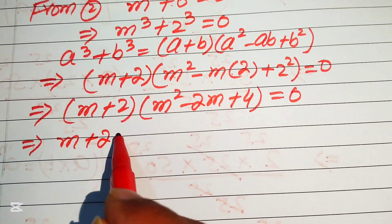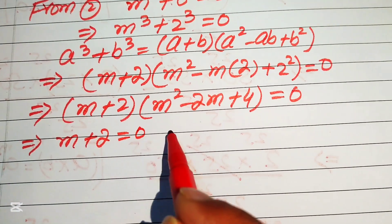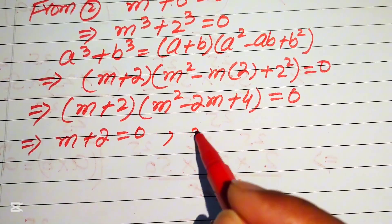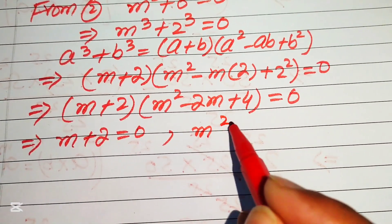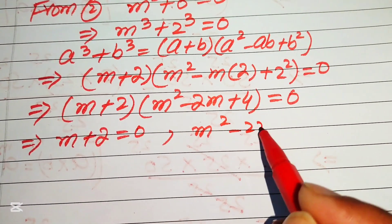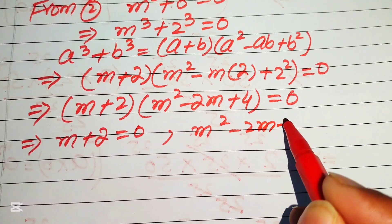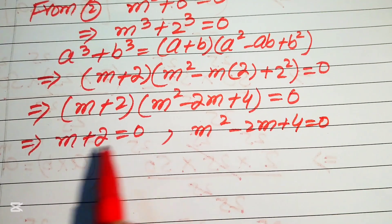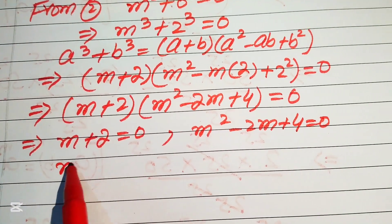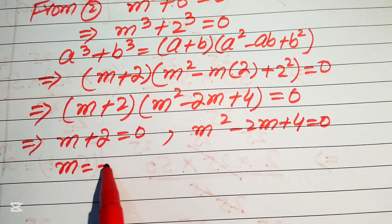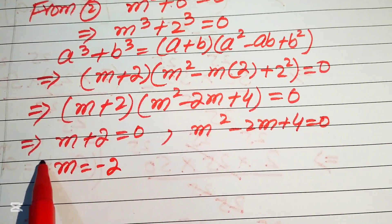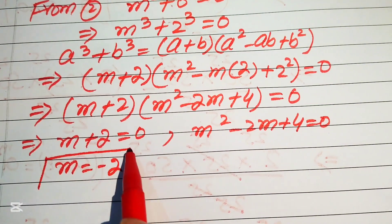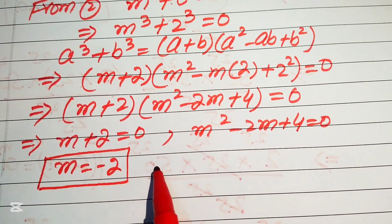From the first sub-case, m plus 2 equals 0, giving m equals minus 2. From the second sub-case, m² minus 2m plus 4 equals 0, which is another quadratic equation for the remaining roots.